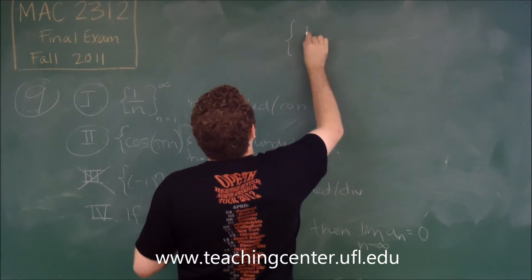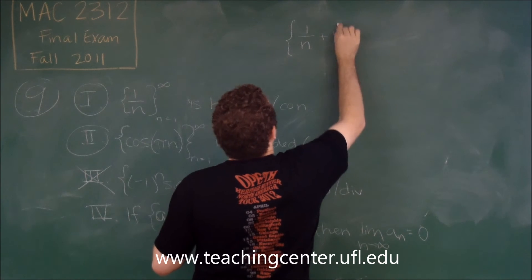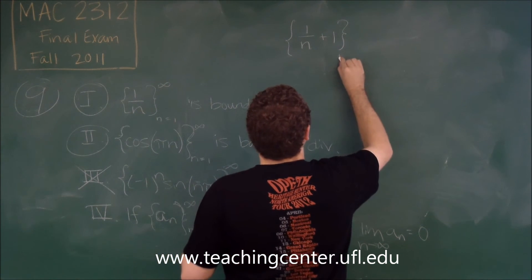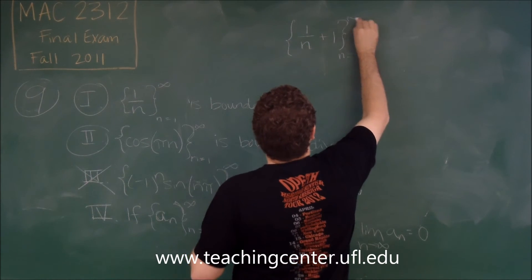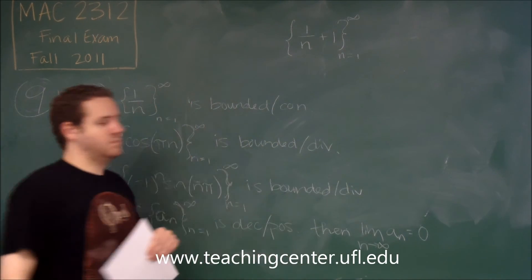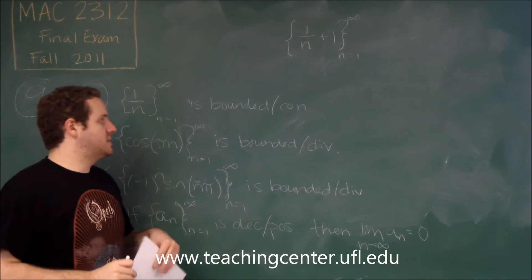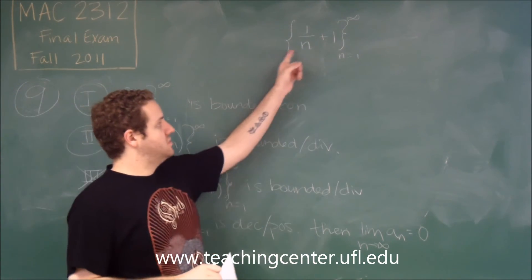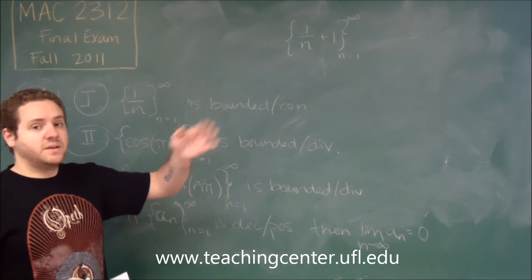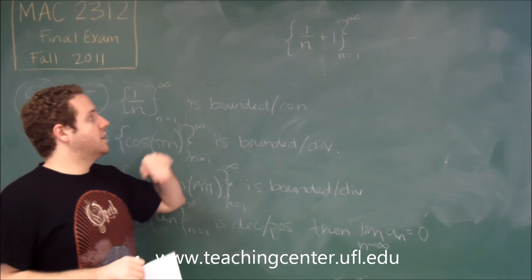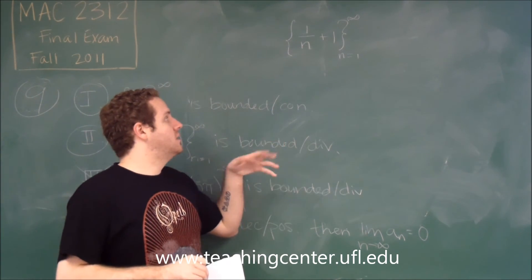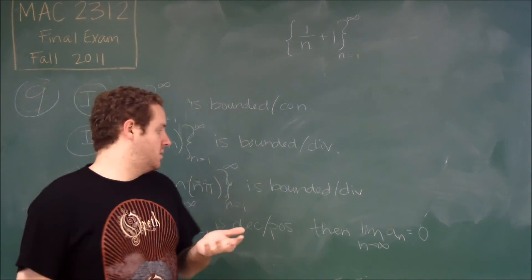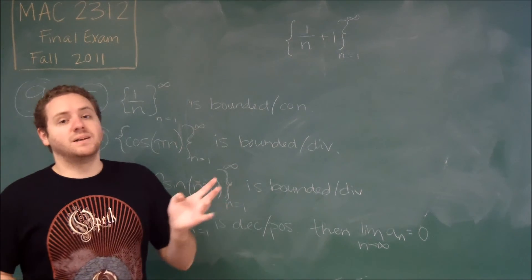What if you had one over n plus one. That's your sequence. Is this decreasing? Yes, because when we plug in one, we get two. But, every subsequent n becomes three halves, you know, four thirds, on and on. It keeps getting smaller and smaller. And, those are always positive.